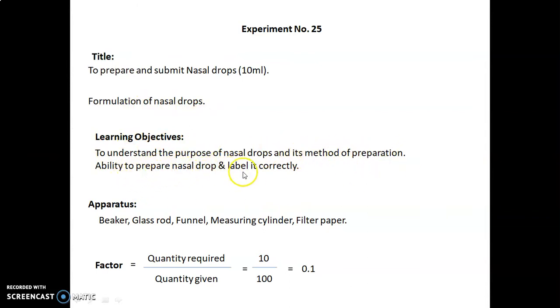Apparatus required are: beaker, glass rod, funnel, measuring cylinder, filter paper. Factor calculated as quantity required upon quantity given, that is equal to 10 upon 100, equals 0.1.